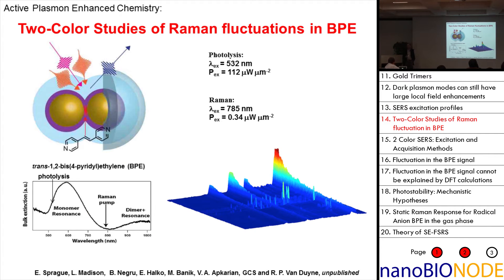Now I'd like to tell you about something fairly recent from the Van Dyne group where the idea was to use these same dimer structures and try to induce chemistry of some sort with light. In this case, the molecule is bispyryl ethylene (BPE), located everywhere on the particle surfaces but with a few in the one nanometer gap between the particles. They did a two-color experiment, irradiating with two different wavelengths simultaneously: 785 nm for the Raman measurement at low intensity of 0.34 microwatts, and occasionally 532 nm at 112 microwatts to drive some sort of electron transfer process.